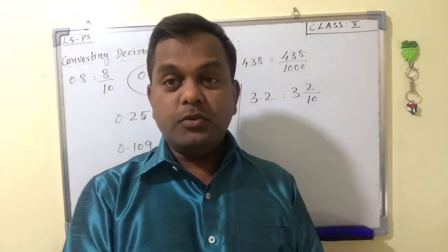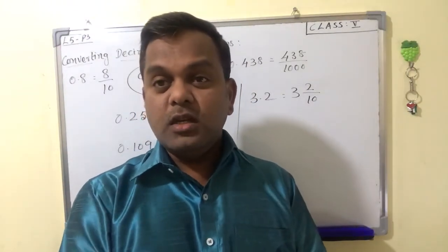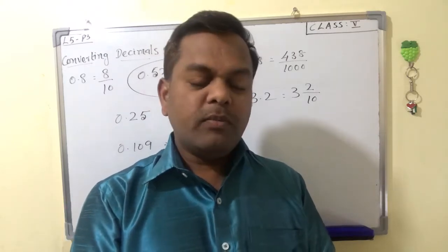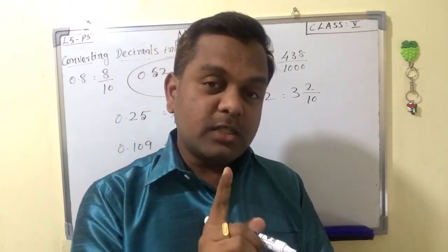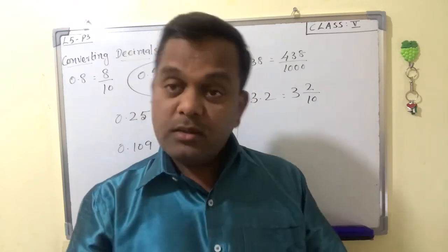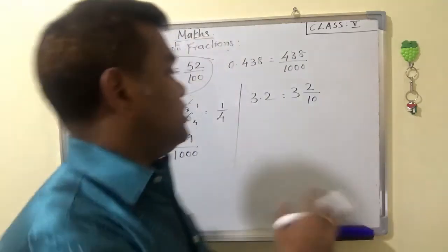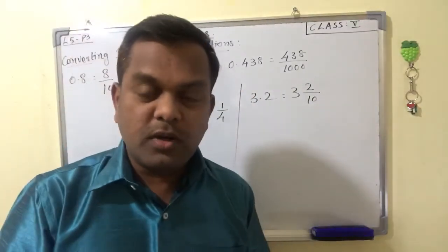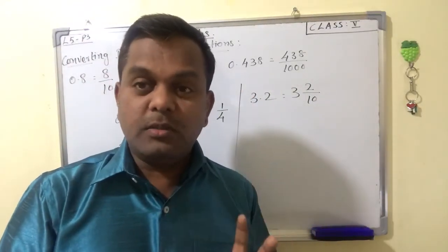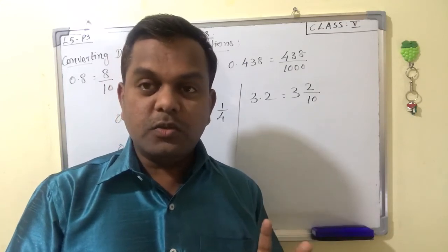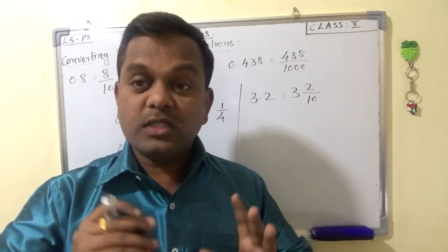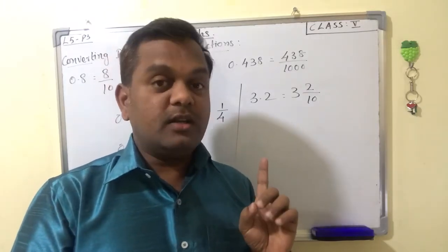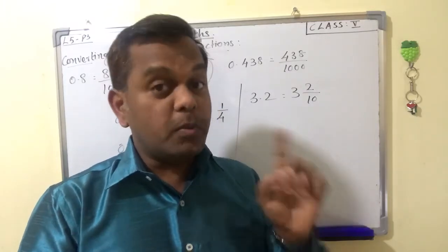Check the number of decimal places. If it is 2 decimal places, divide by 100. If it is 3 decimal places, divide by 1000. If it is only one decimal place, divide by 10. So 3.2 gives us 3 and 2 by 10. This is a mixed fraction — we can convert this mixed fraction into an improper fraction.